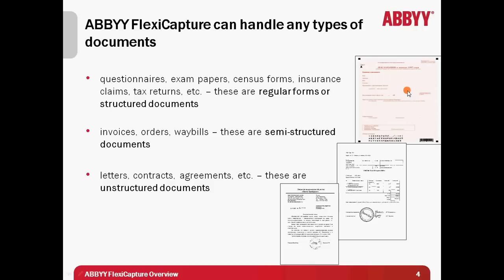In structured documents, the position of needed information is fixed and never changes from one document to another. Good examples are questionnaires, exam papers, insurance claims or tax returns. In semi-structured documents, only part of the fields with necessary information has a fixed position. Position of other important fields can change from one document to another. Good examples are invoices, orders or waybills.